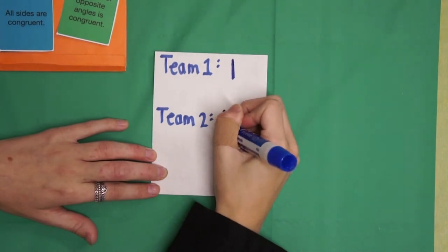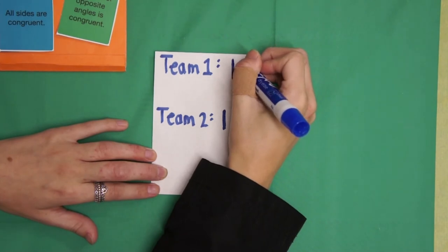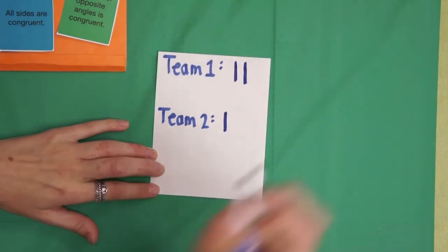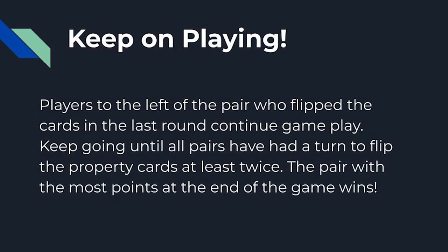Continue sharing quadrilaterals until no pair can find another quadrilateral type to share. Return each card to its pile for the next turn.